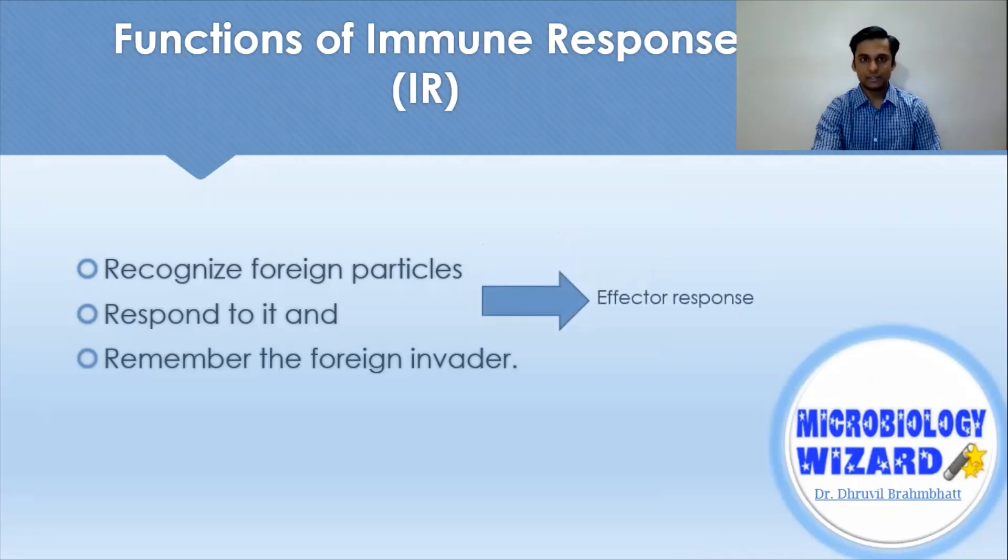A successful effector response either eliminates that foreign material or renders it harmless to the host, thus preventing disease. If the same invader is encountered again, the immune system is prepared to mount an intense response to eliminate the invader and protect the host again. This is called an anamnestic response.